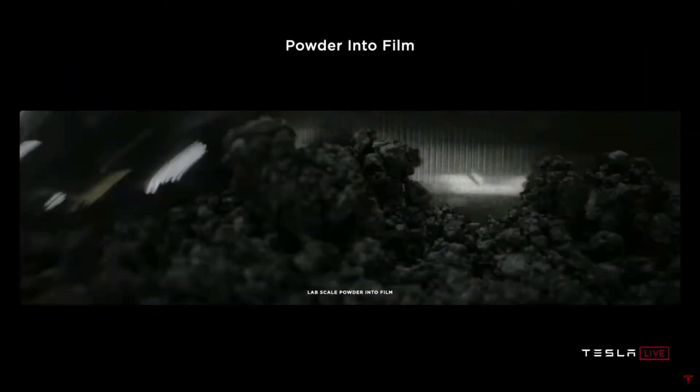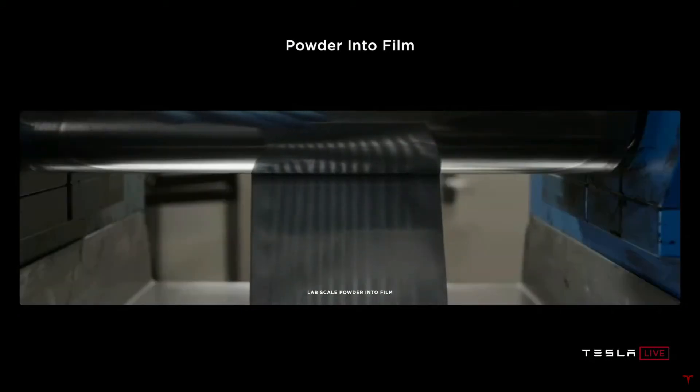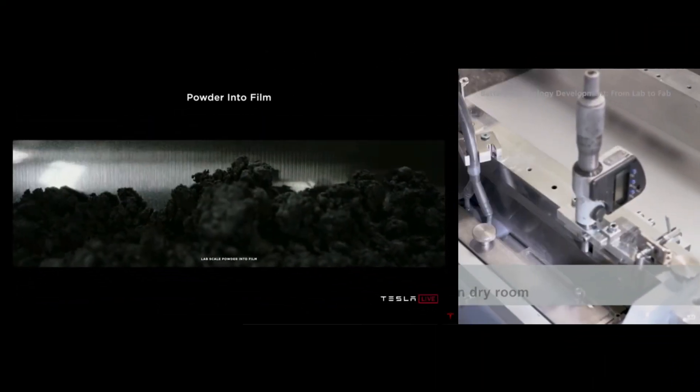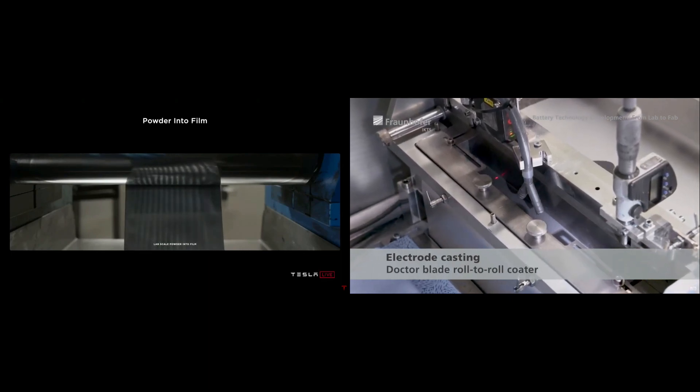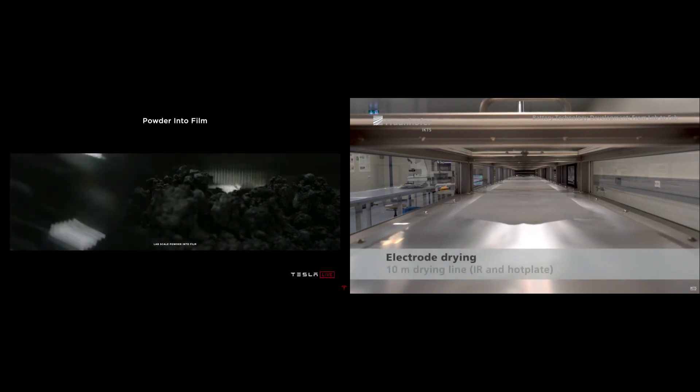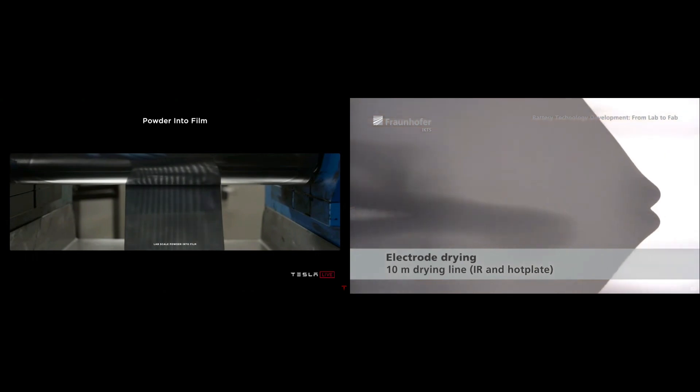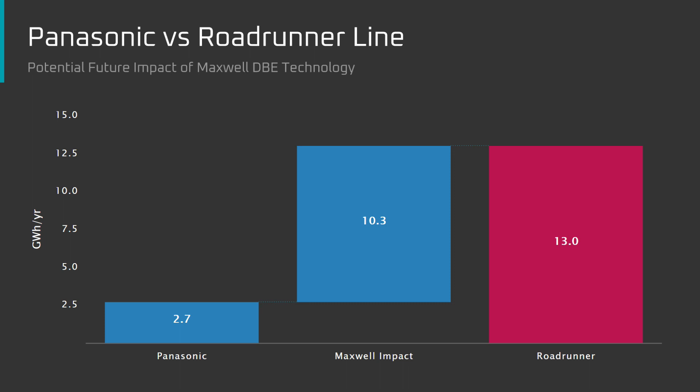Back to DBE. As a quick refresher, DBE is used to coat active energy storing anode and cathode materials onto the current collector foils of battery electrodes. It uses a dry process rather than a wet slurry. DBE has nothing to do with solid state. Solid state batteries are a type of battery that uses a solid electrolyte material, whereas DBE is a manufacturing process.